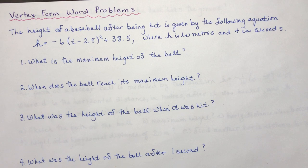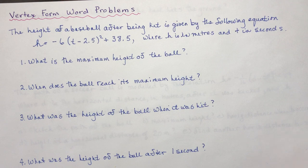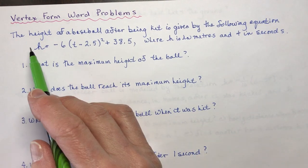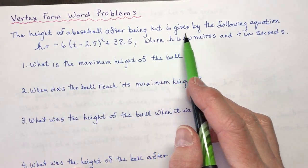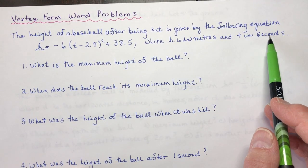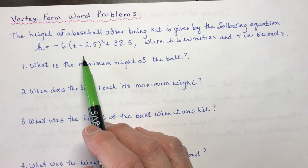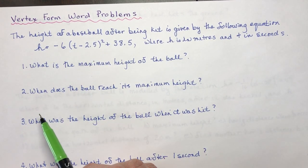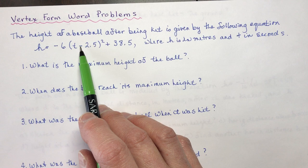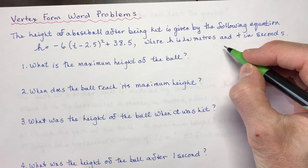That's what we'll look at in the next lesson, which is called completing the square. Today though, we're just going to look at the word problems themselves — a couple of different ones that you'll be surprised how easy they are once you know what vertex form is. This question says the height of a baseball after being hit is given by the following equation, where h is in meters and t is in seconds. Before you even begin, can you tell me what the vertex is?